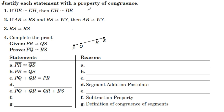For number one through three, justify each statement with a property of congruence. The three properties of congruence are reflexive, symmetric, and transitive.